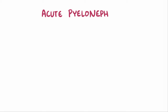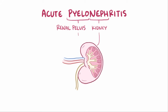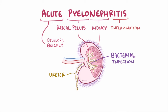With acute pyelonephritis, pyelo means pelvis, and neph refers to the kidney, so in this case it's the renal pelvis, which is the funnel-like structure of the kidney that drains urine into the ureter, and itis means inflammation. So acute pyelonephritis describes an inflamed kidney that develops relatively quickly, usually as a result of a bacterial infection.